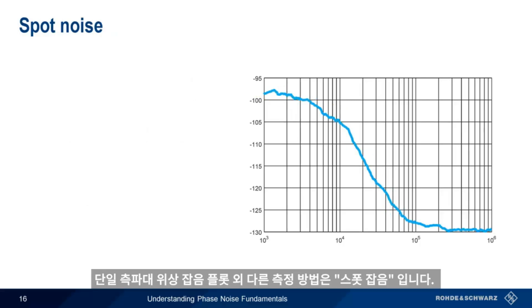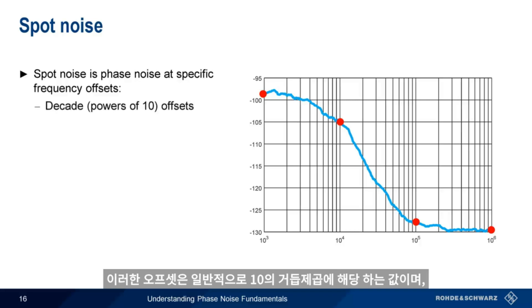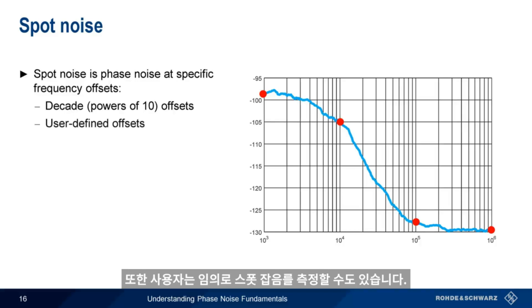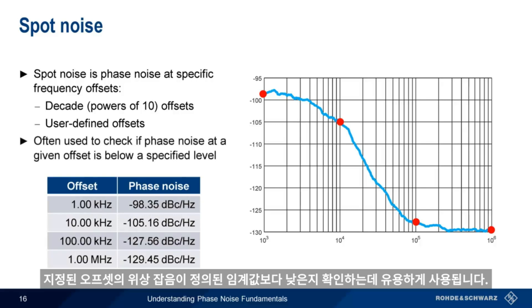In addition to the single sideband phase noise plot, another common way of representing phase noise measurement results is something called spot noise. Spot noise is nothing more than the phase noise measured at specific frequency offsets. By default, these offsets are usually so-called decade offsets — that is, offsets which are powers of 10, such as 1 kHz, 10 kHz, 100 kHz, etc. It's also possible to measure spot noise at arbitrary, user-defined offsets. Spot noise is commonly given in table form, and is most often used to verify that phase noise at a given offset is below a specified threshold.